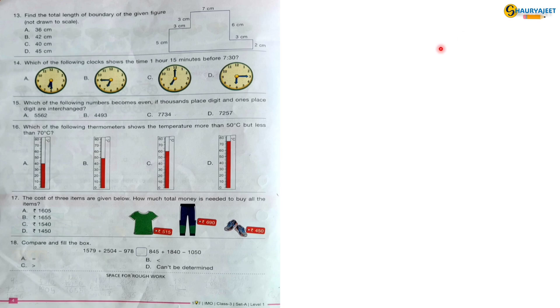Question 13: Find the total length of boundary of the given figure, not drawn to scale. Length of upside boundary is 3 plus 7 plus 3 equals 13 cm. So downside boundary will be same, that is 13 cm. Then 13 plus 5 plus 3 plus 3 plus 7 plus 6 plus 3 plus 2 is equal to 42 cm. So option B is correct.